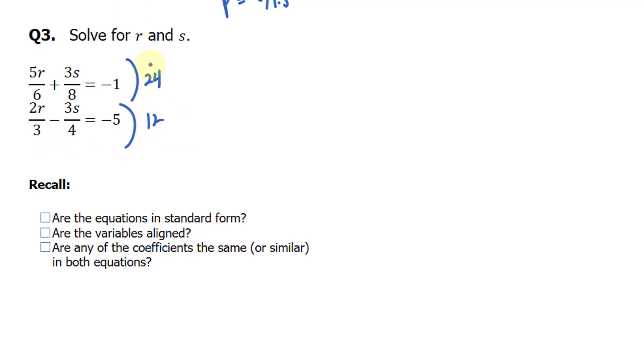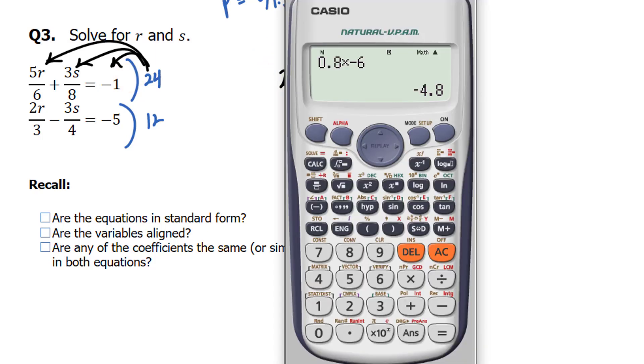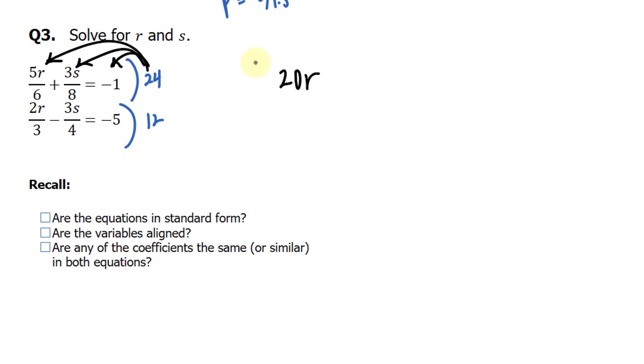So I'll multiply 24 by each of these terms in the top equation and 12 for the bottom equation. And this should give us two new equations that are not fraction based. So 24 times 5 divided by 6 makes 20R. 24, and I'll show you this on your calculator if you like, 24 times 3 divided by 8 is 9S. And 24 times negative 1 is negative 24. We'll do the same thing for the bottom. 12 times 2 over 3 makes 8R.